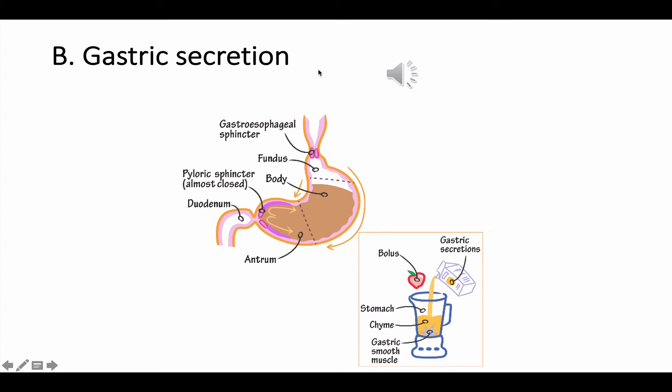Gastric secretion is done in the stomach and achieved by three types of cells located in different parts of the stomach. The stomach is classified into three parts: the first is the fundus, located just after the esophagus; the second is the extended part called the body; and the last part is the antrum.